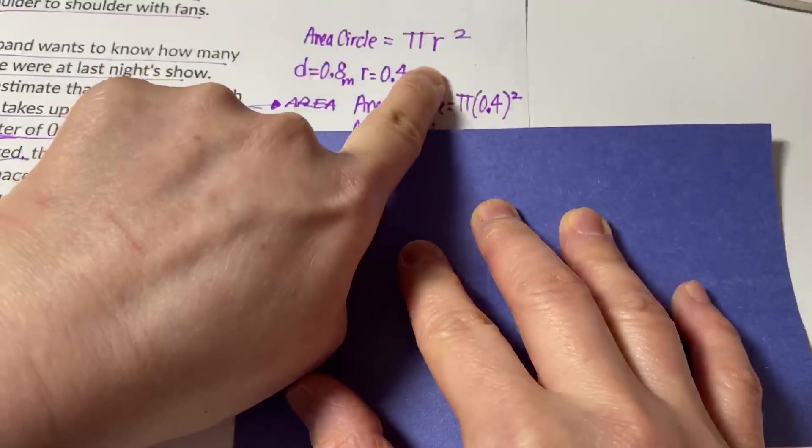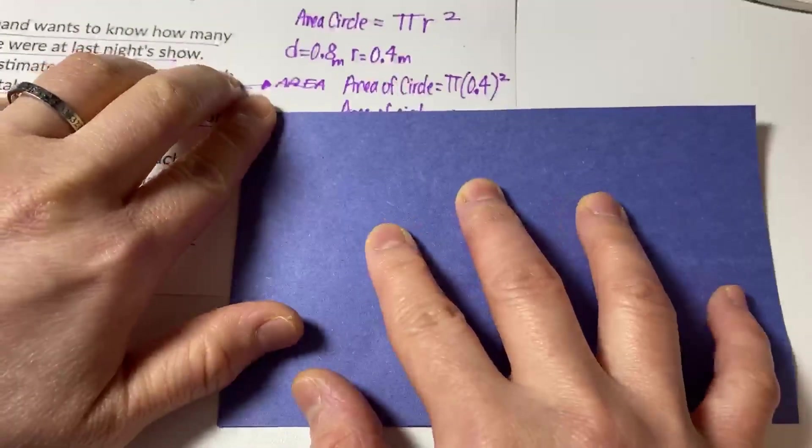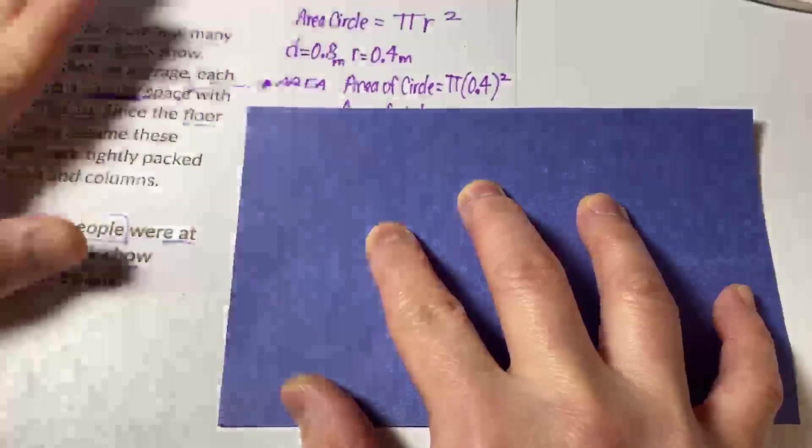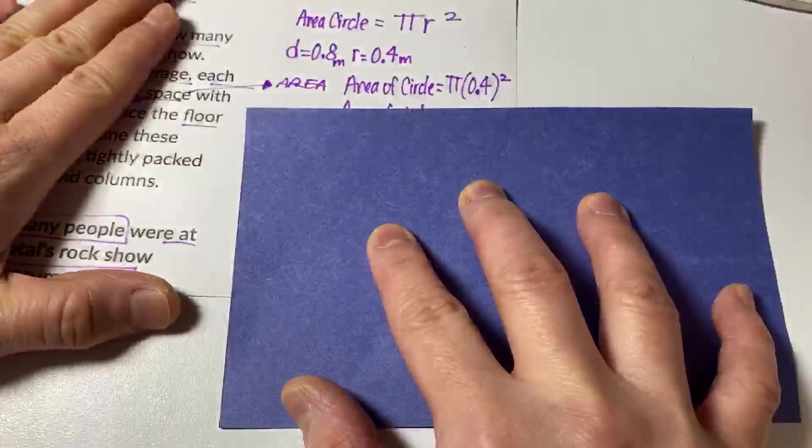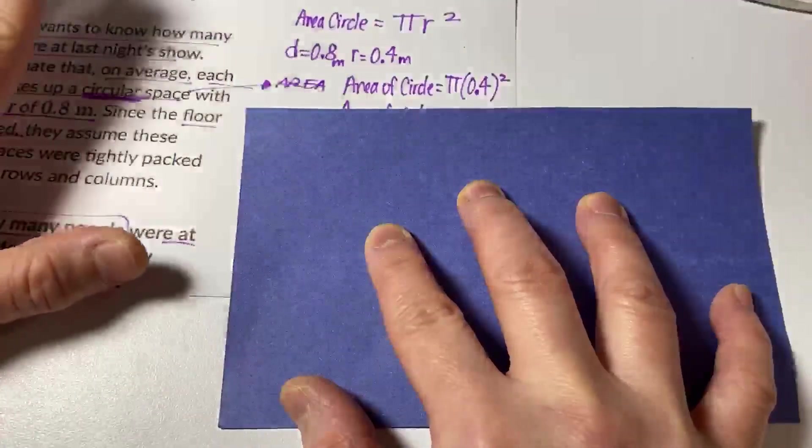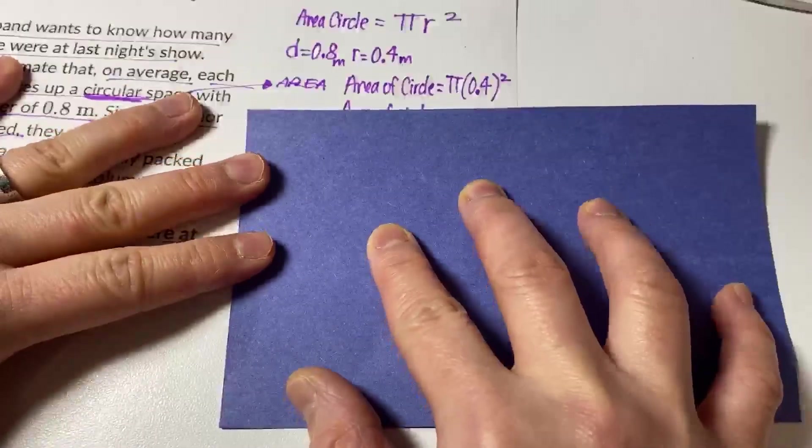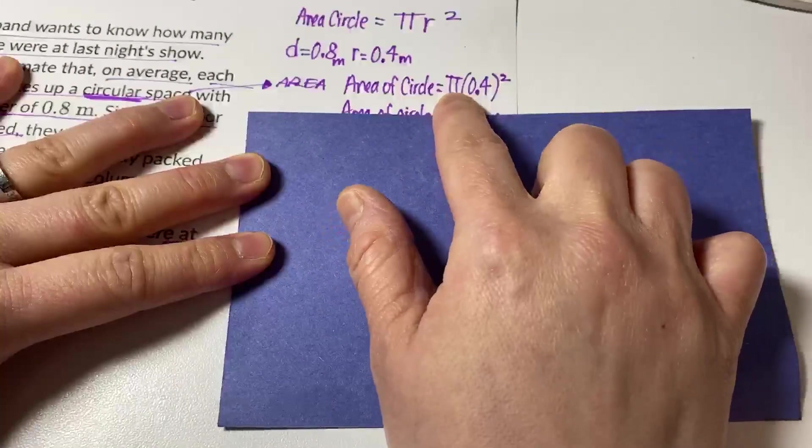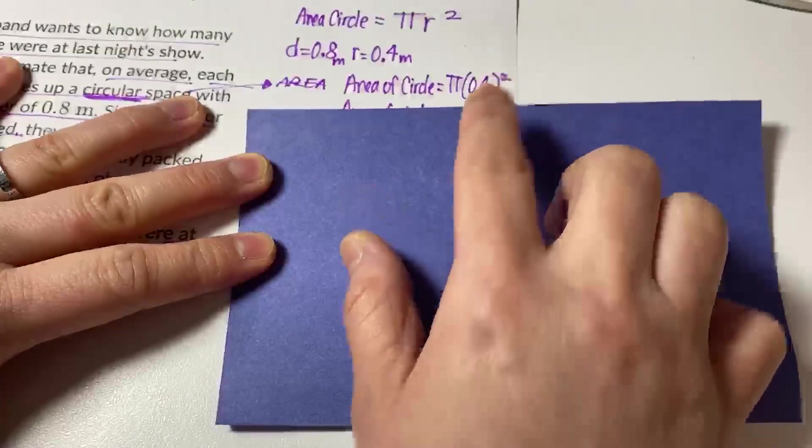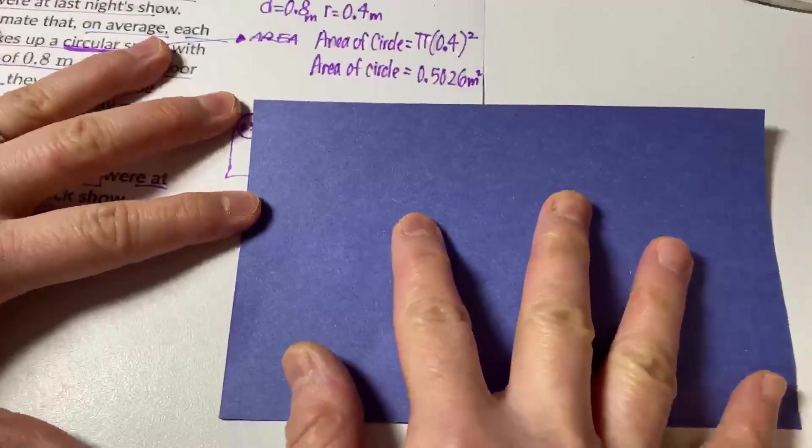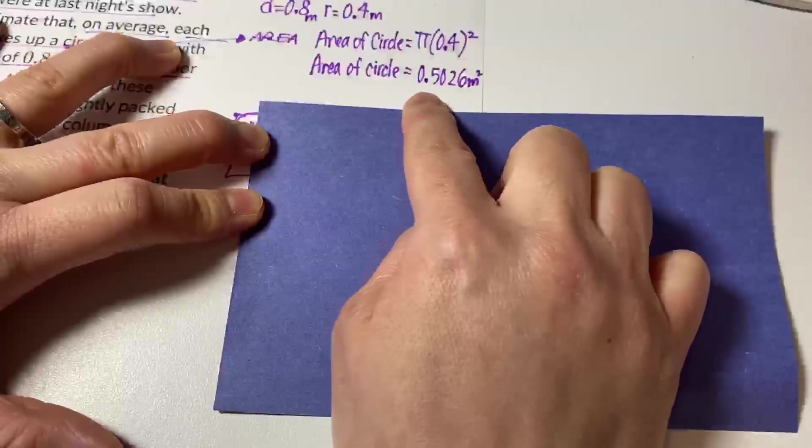So 0.4 for the radius, and I put pi in the calculator, since the question did not mention anything about using 3.14 for pi like the other questions we dealt with. So I use the pi symbol in the calculator, and then I multiply that by 0.4 squared. And I get this as my area of a circle.